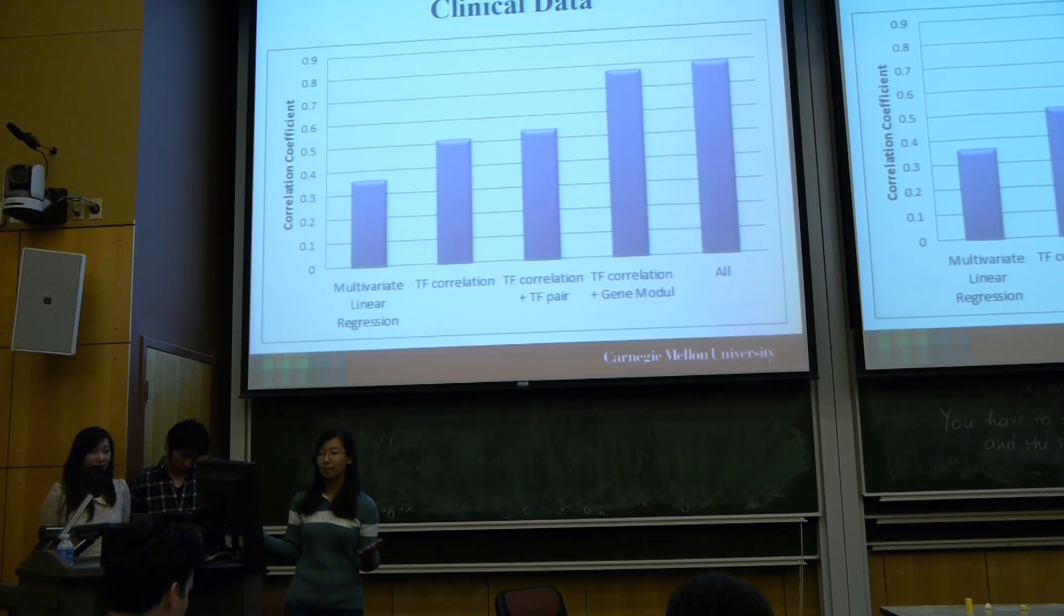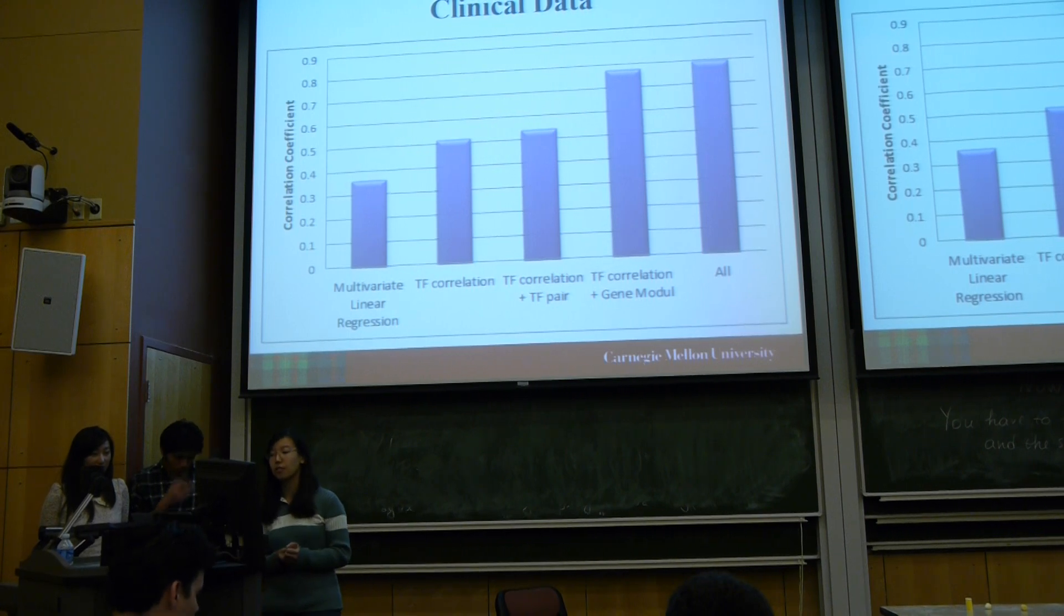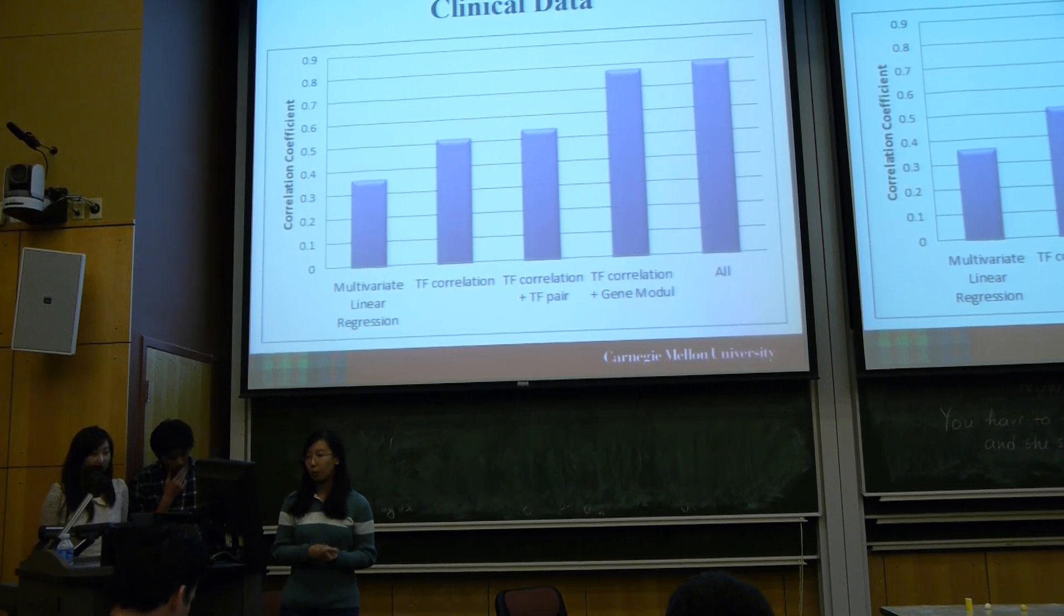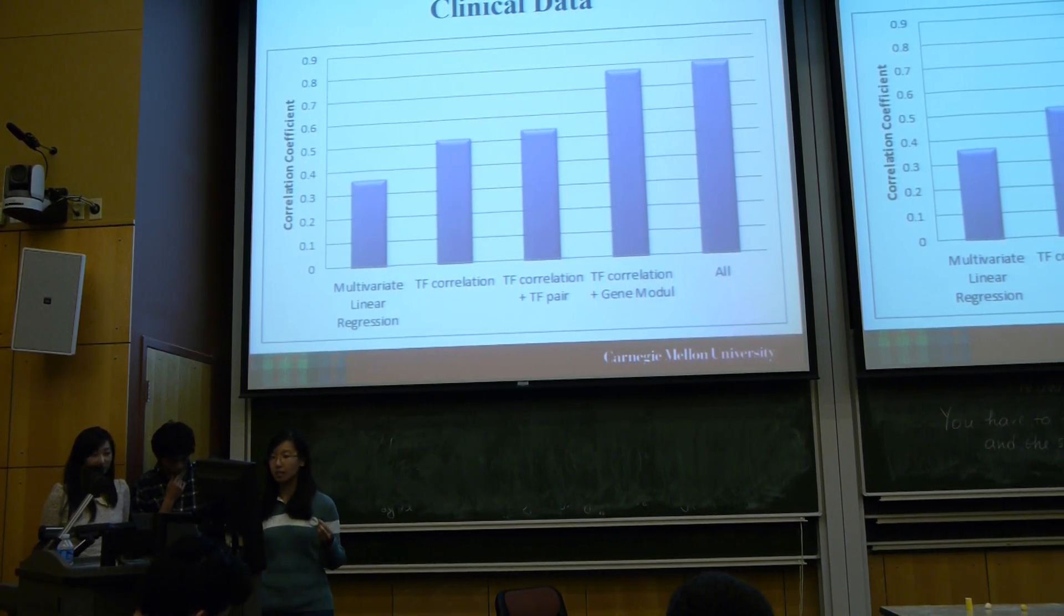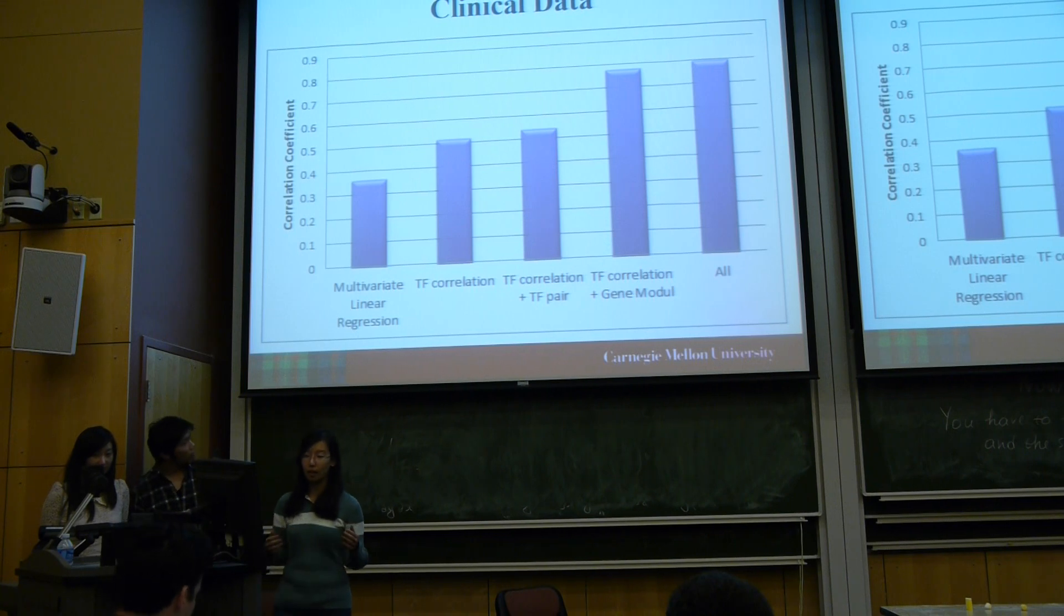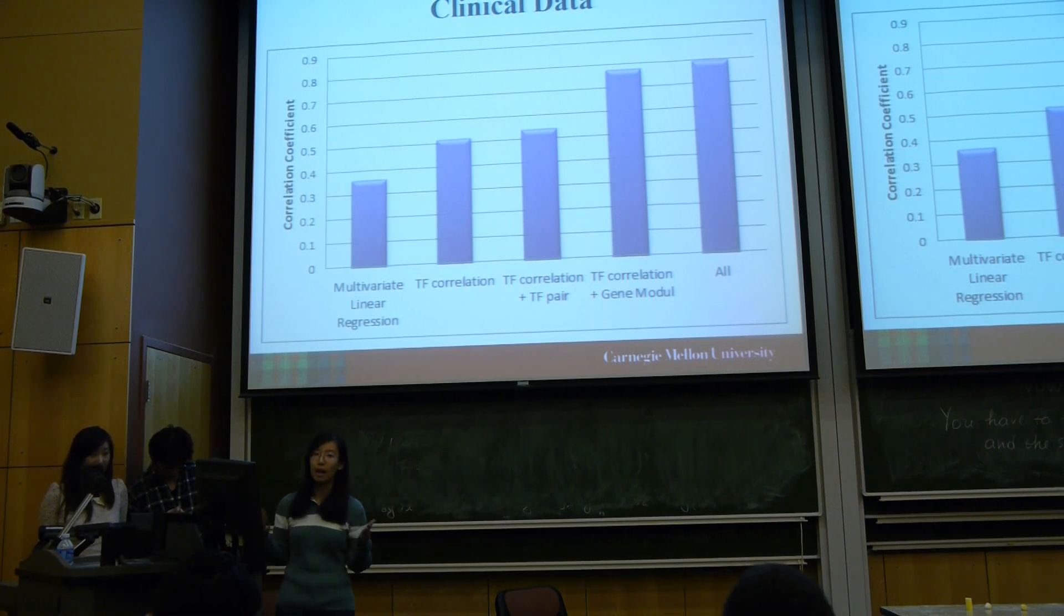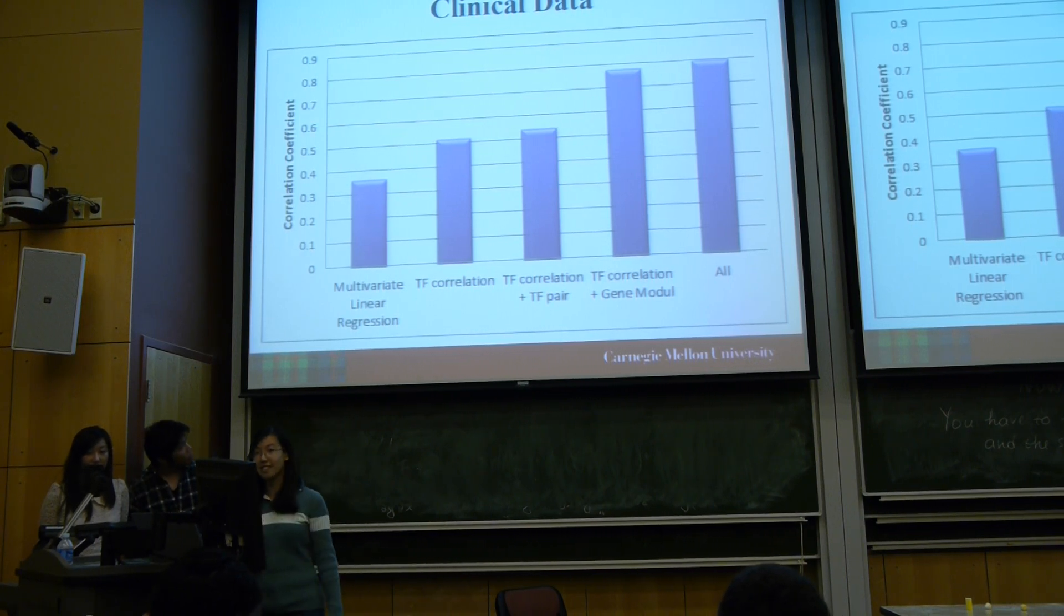Based on this, we mainly get two conclusions. First, we use machine learning methods to prove our hypothesis about the three biological prior knowledge. Second, when we put machine learning into practice, we can include more prior knowledge to improve performance. That's our project. Thank you.